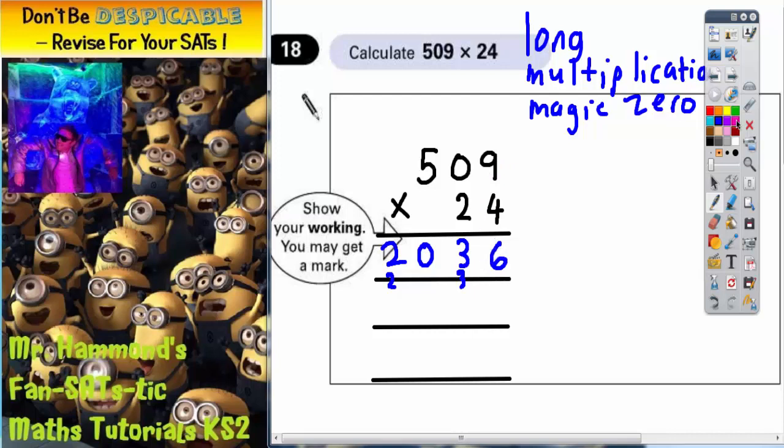The next line is where we're going to multiply 509 by 20, because this is 24. But any time you multiply by 20, it's the same as putting the magic zero in first, and then multiplying by 2. So now we've put this 0 in for the 20, we just need to multiply by 2. So we're going to do 2 nines, 2 zeros, and 2 fives in that order.